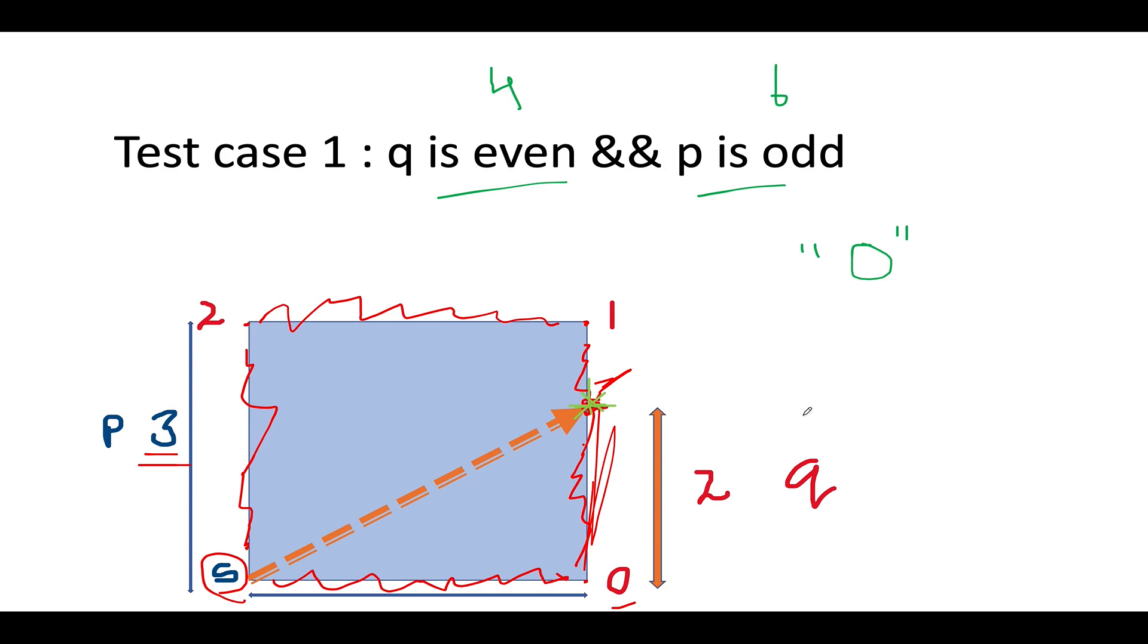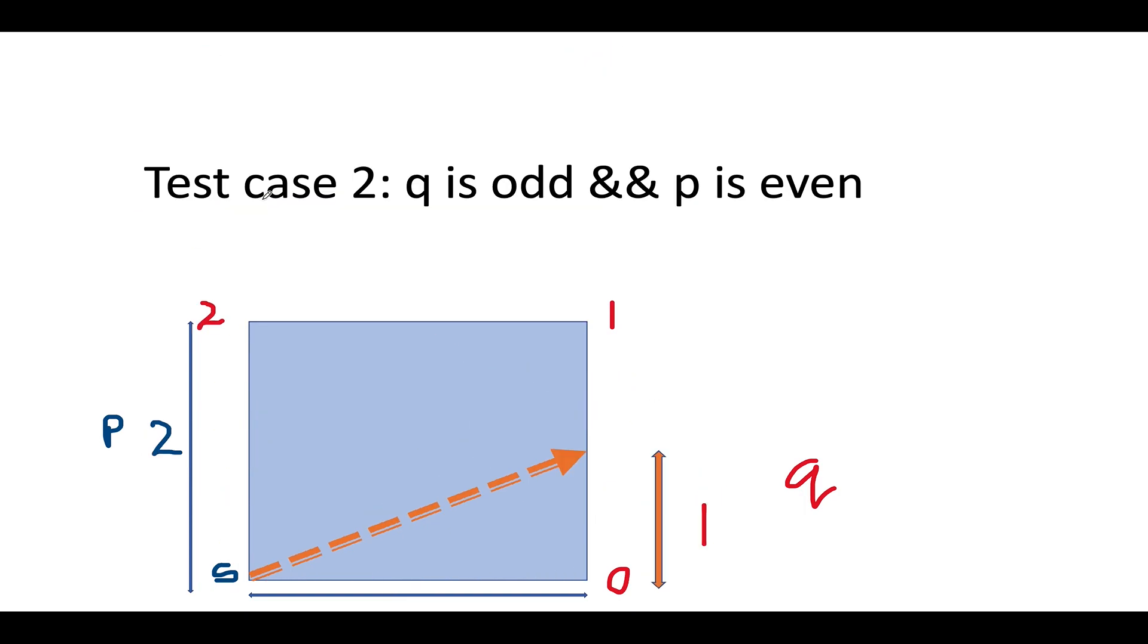So this is first test case that we can think of. The other test case would be equal to where the final terminal value of q is odd and final terminal value of p is even. So what is going to happen in this case, let's assume q as one p as two. So the light would be reflected about this particular location, and it will converge at the second receptor ID somewhat like this. So the answer in all such case would be equal to two.